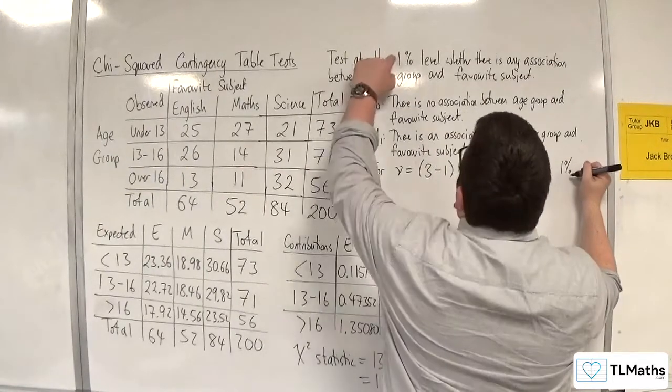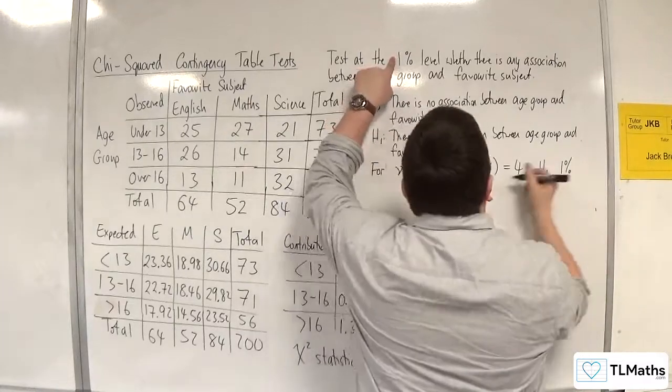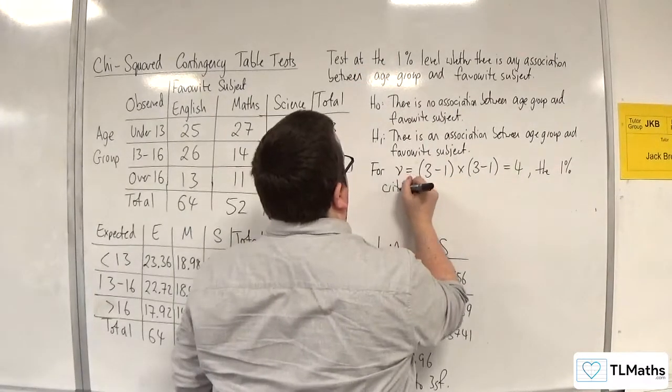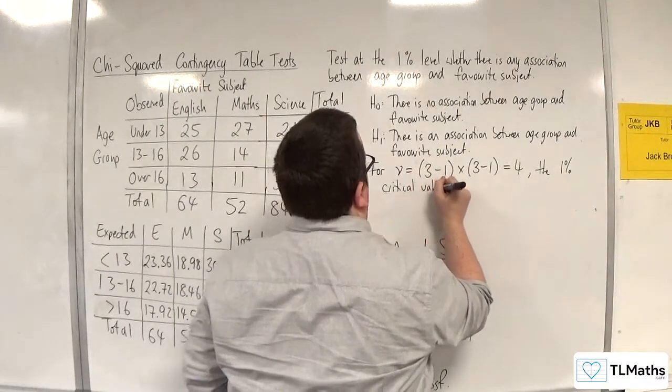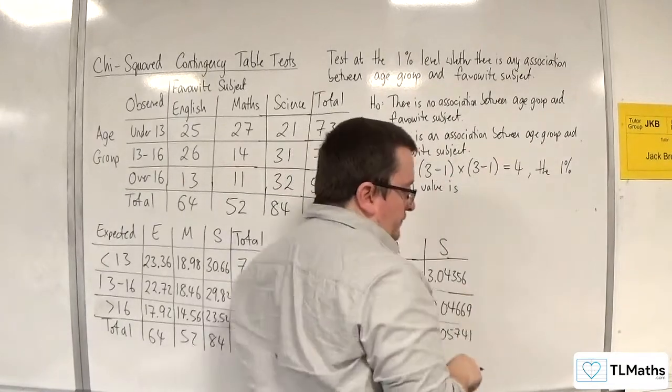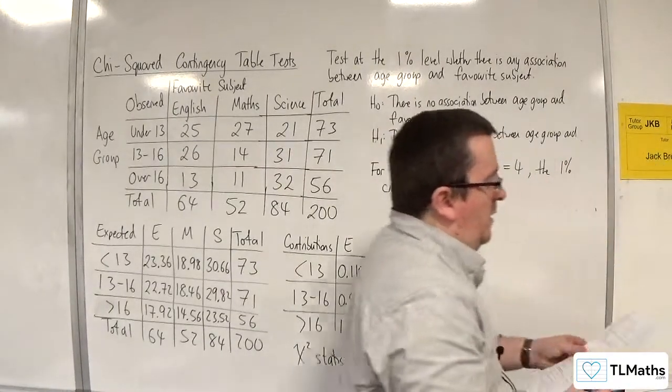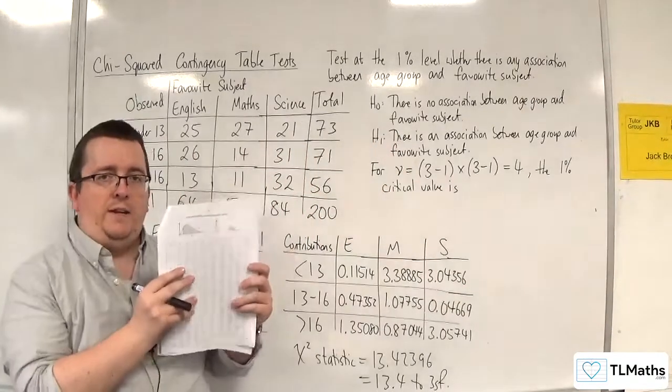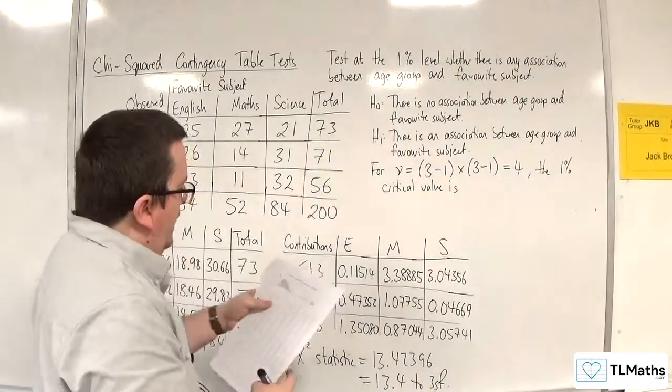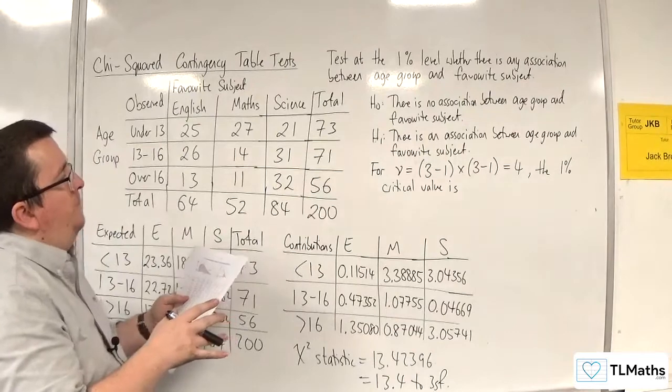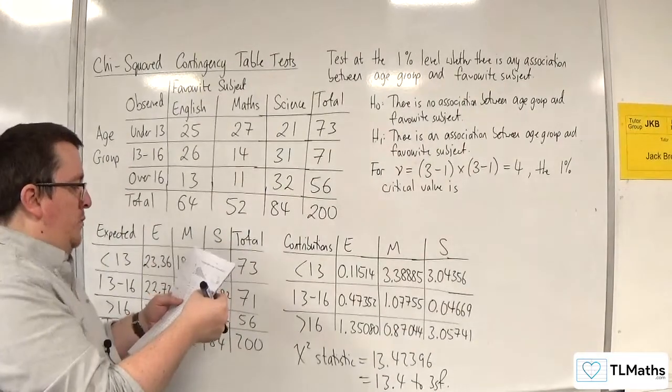The 1%, because we're looking at 1% significance level, critical value is, so we go to our tables on page 13 in the formula booklet, we're looking at the right-hand side, we're looking at 1%, so the 1% column.